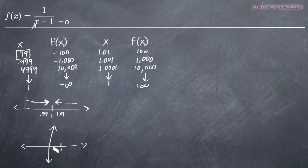Our graph is going to move toward negative infinity like this. If we're coming from the positive side, from the right-hand side, 1.01, we're going to move toward positive infinity. So the graph is going to come up like this and we've got an asymptote, a vertical asymptote at x equals 1.